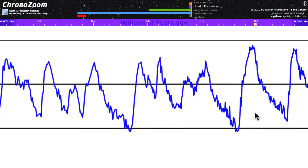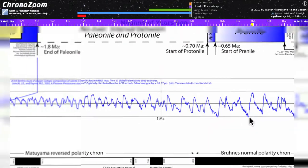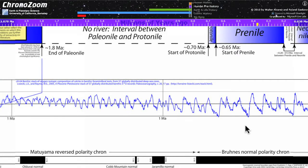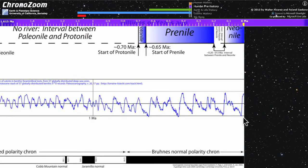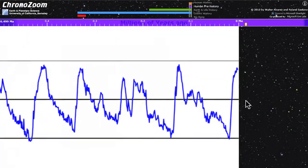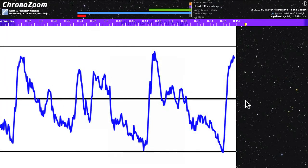If you zoom out now a little bit and pan a little bit to the right, you can see the curve through the last million years which shows successive glacial intervals when the curve is low and interglacials when the curve is high. At the very right hand end, you can see how the curve jumps up very suddenly about 10,000 years ago. That's what's called the last deglaciation.